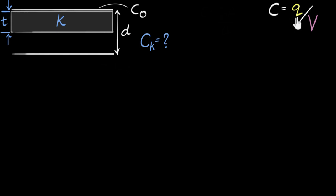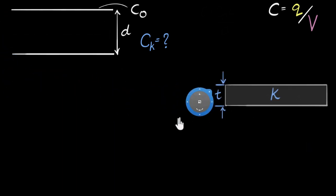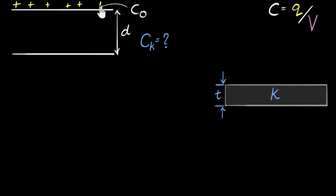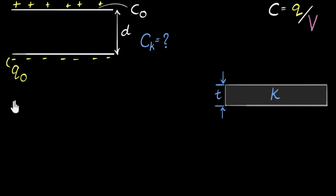So how do we use this? First, let's apply it to our capacitor without the dielectric. Let me throw in some charge — say positive charge on one plate and equal negative charge on the other. Let's call that Q₀. And let's say the voltage generated was V₀. Then the original capacitance C₀ equals Q₀ divided by V₀.